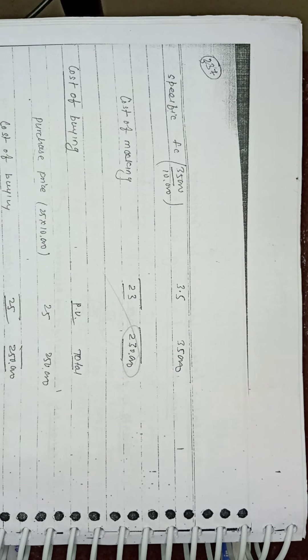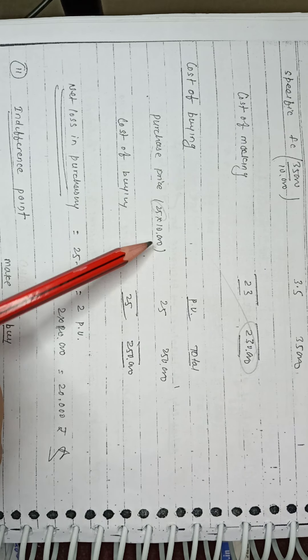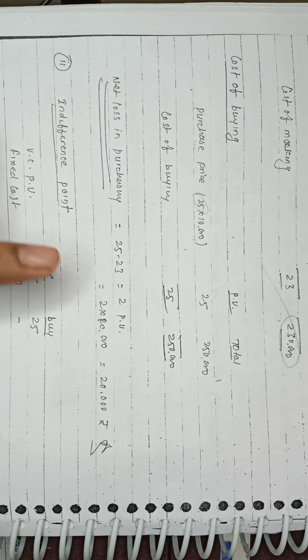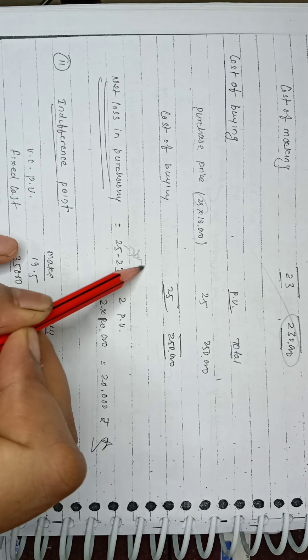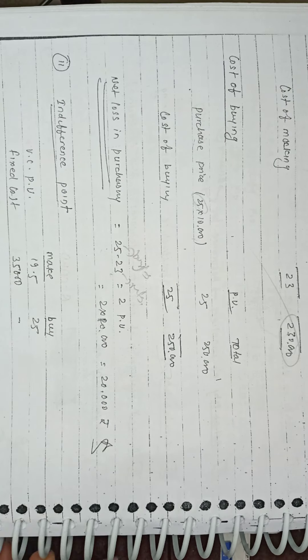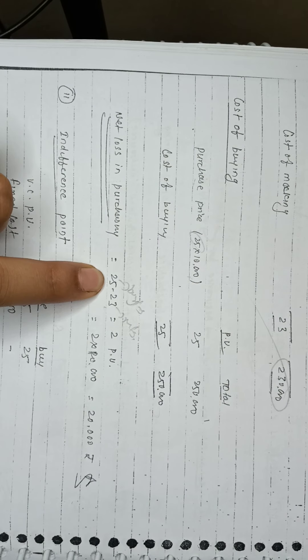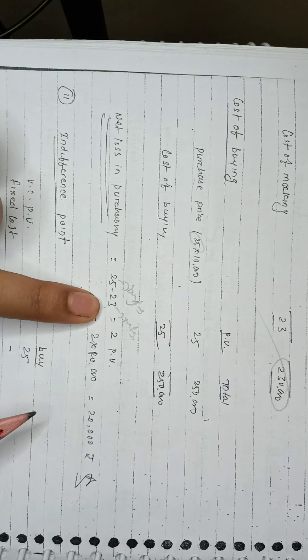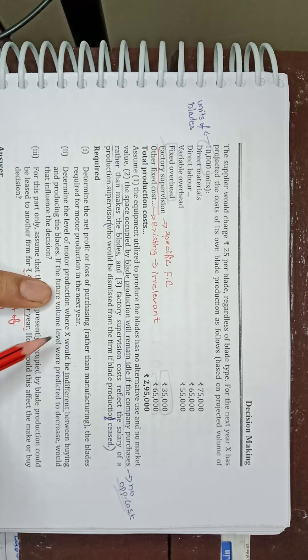Total cost of making is 2,000,000. Cost of buying: 25 Rs per blade times 10,000 units equals 250,000. So comparing: buying costs 250,000 and manufacturing costs more. If we buy, we will have a net loss. We are asked for net profit or loss of purchasing — so purchasing gives us a net loss.